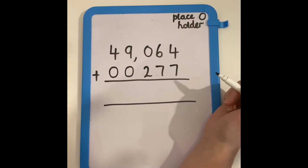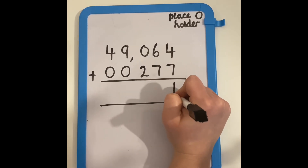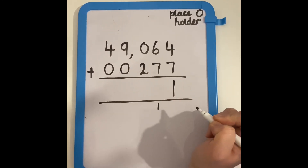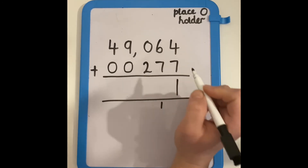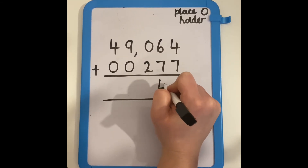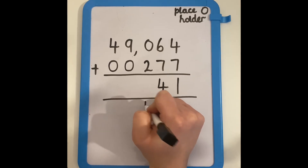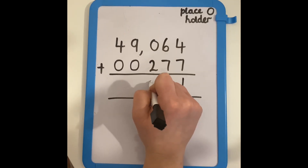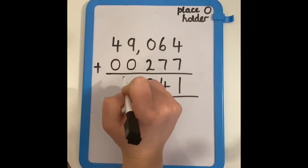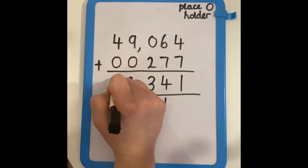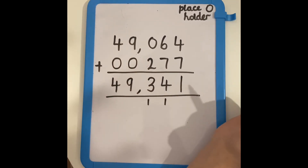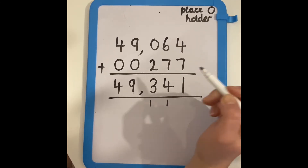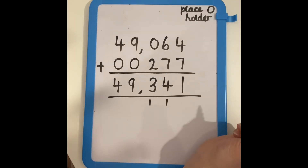I know that four add seven is 11, which goes over ten, so I need to carry my one over into the tens column. I know that six add seven is 13, add one more makes 14. Again, I need to carry one over to the hundreds column. Zero add two is two, add one more is three. Nine add zero is nine, and four add zero is four. I can see that 49,064 add 277 is 49,341.